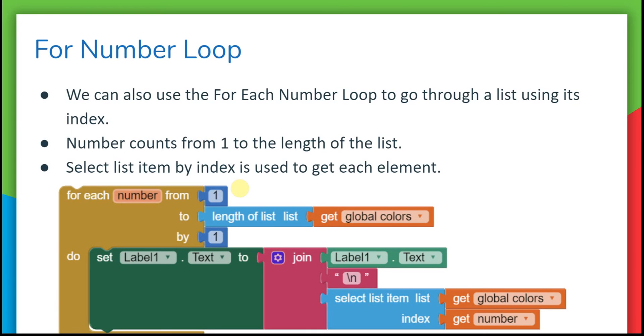But you can also use the for-each number loop. This is the counter-controlled loop that we've used in the past to draw shapes. It's a little bit more complicated this time. We have a number and we can use this number as the index of the list. We want to set up the number to count from one to the length of the list, and each time through we want to select the list item at that index.